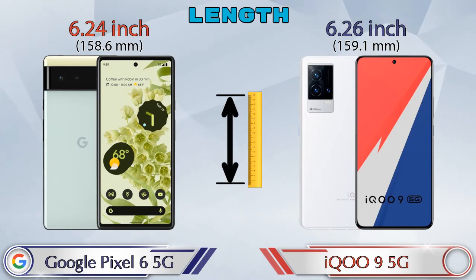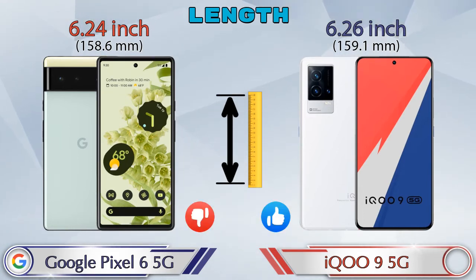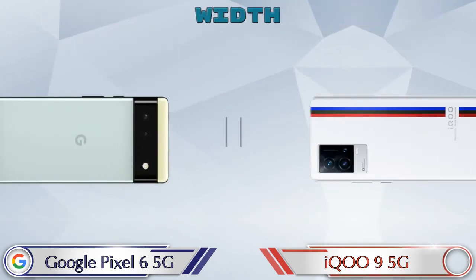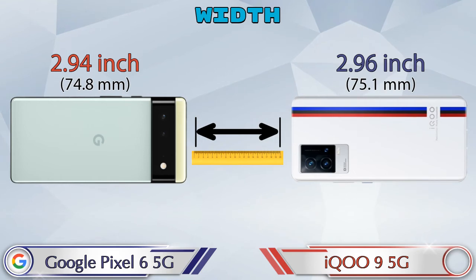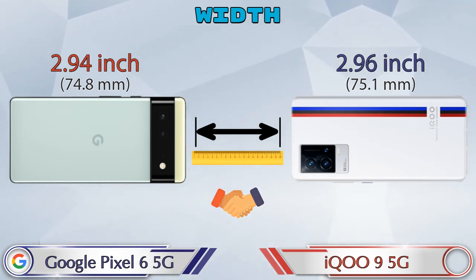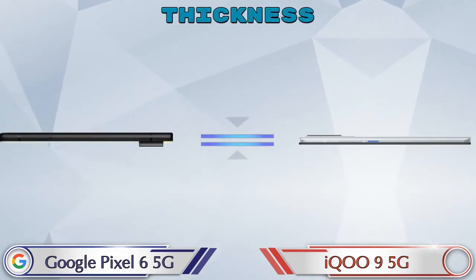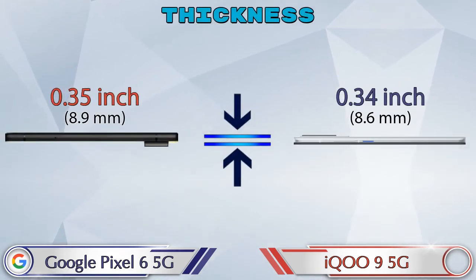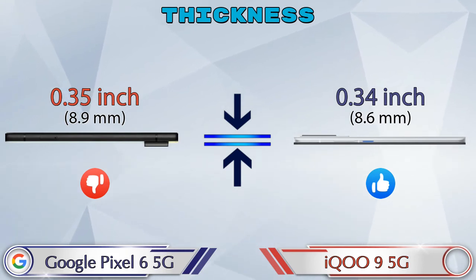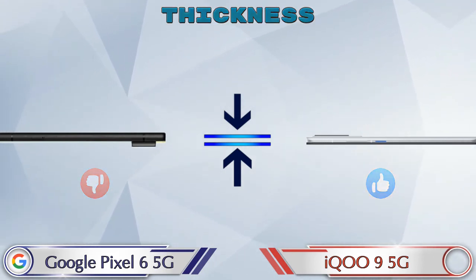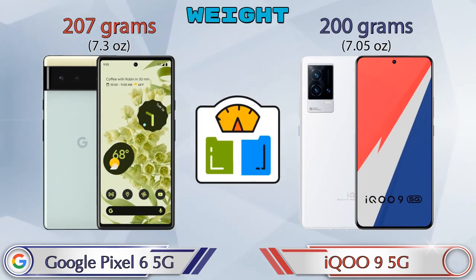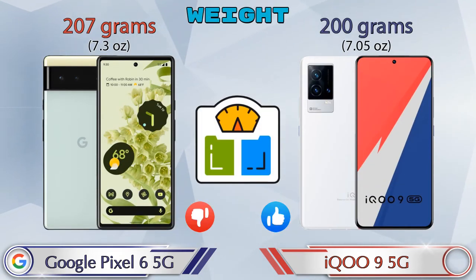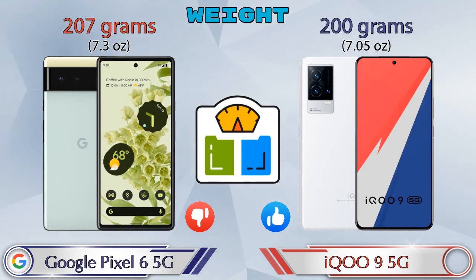Talking about the length of both phones: Pixel 6 5G is 6.24 inches and iQOO 9 5G is 6.26 inches. Width in Pixel 6 5G is 2.94 inches, which is almost the same. Thickness: Pixel 6 5G is 0.35 inches and iQOO 9 5G is 0.34 inches. Weight: Pixel 6 5G is 207 grams and iQOO 9 5G is 200 grams.